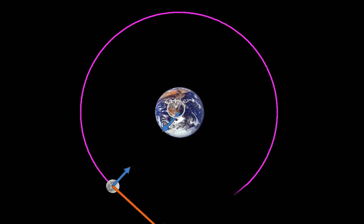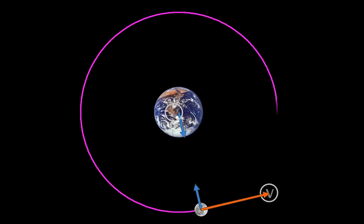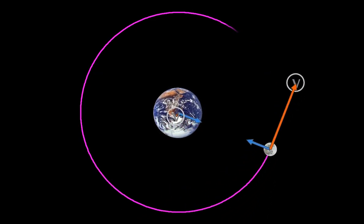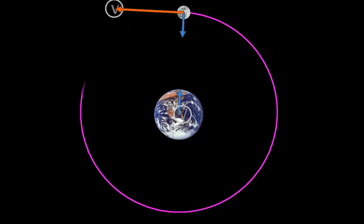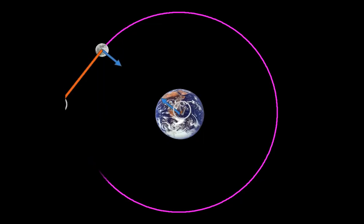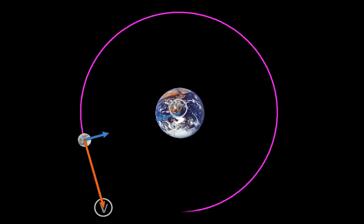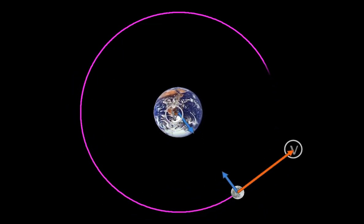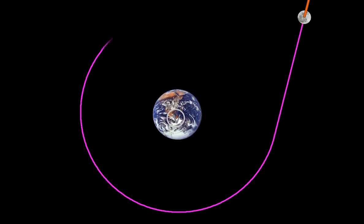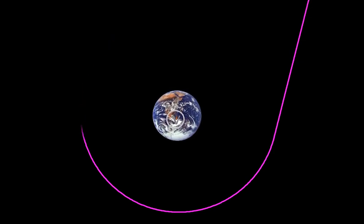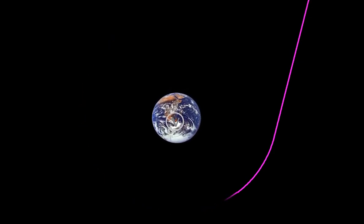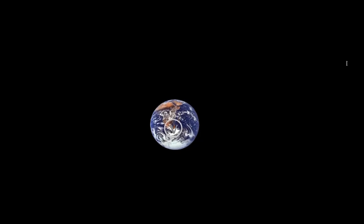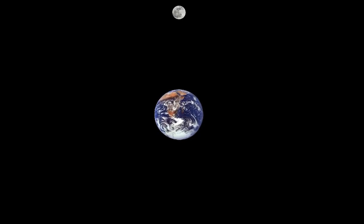If I were to somehow turn off gravity — which of course we can't do, because gravity is inherently a property of mass — what would happen to the object? You can see it just goes off at the tangent. Newton's first law takes effect.